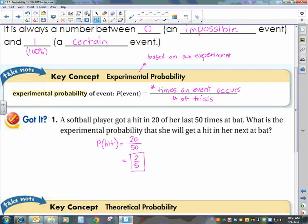So that probability reduces to 2 over 5. Again, you can leave it as a fraction, you can write it as a decimal, or you can change that to a percent, whatever you like.